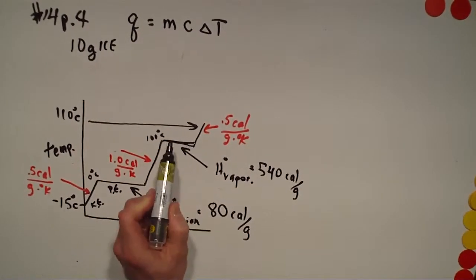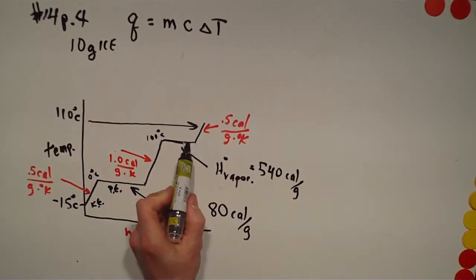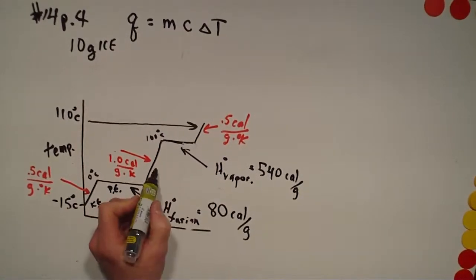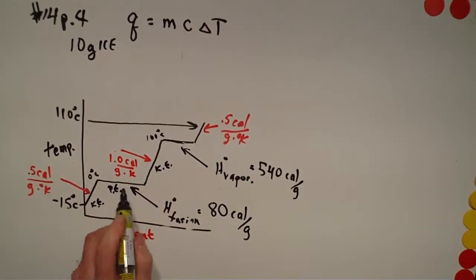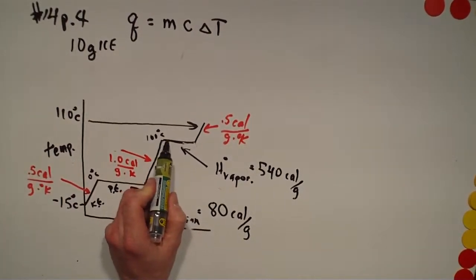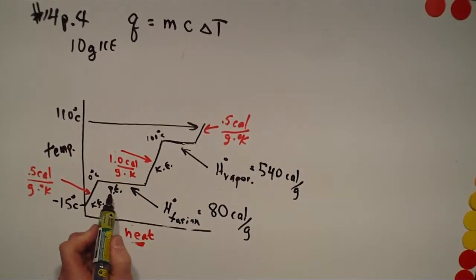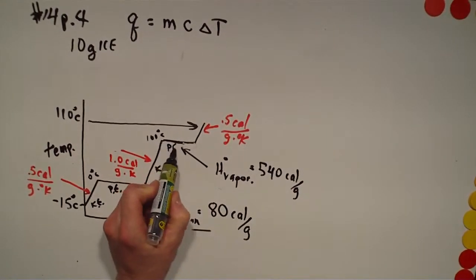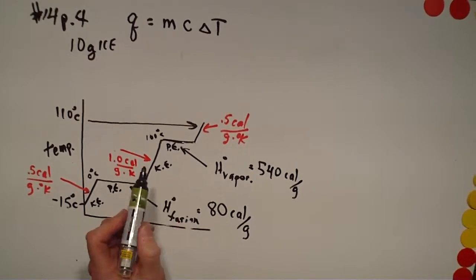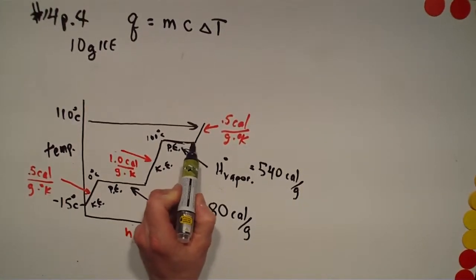At 100°C the water is now boiling. Notice the temperature hasn't changed because, just like down here, as you heat the water you're adding kinetic energy — that's why the temperature was changing. But when you get to this boiling point, now you're breaking apart the water bonds, just like you broke apart the bonds for ice. Breaking bonds is adding potential energy.